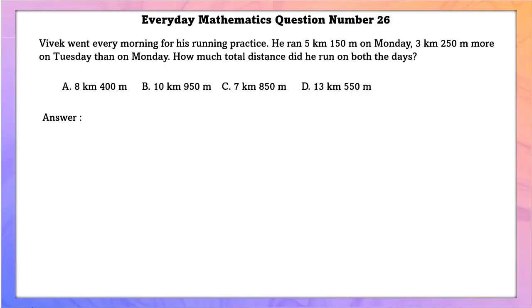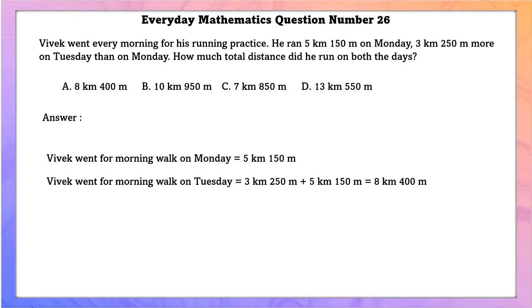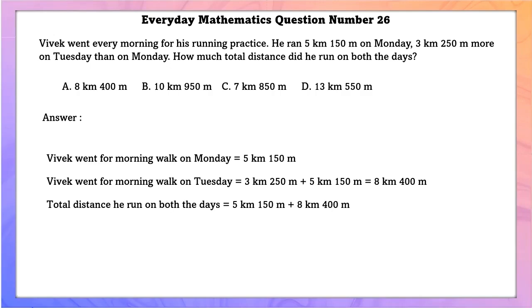Everyday Mathematics question number 26. Vivek ran 5 km 150 m on Monday. On Tuesday he ran 3 km 250 m more than Monday, so Tuesday = 8 km 400 m. Total distance covered on both days is 13 km 550 m.